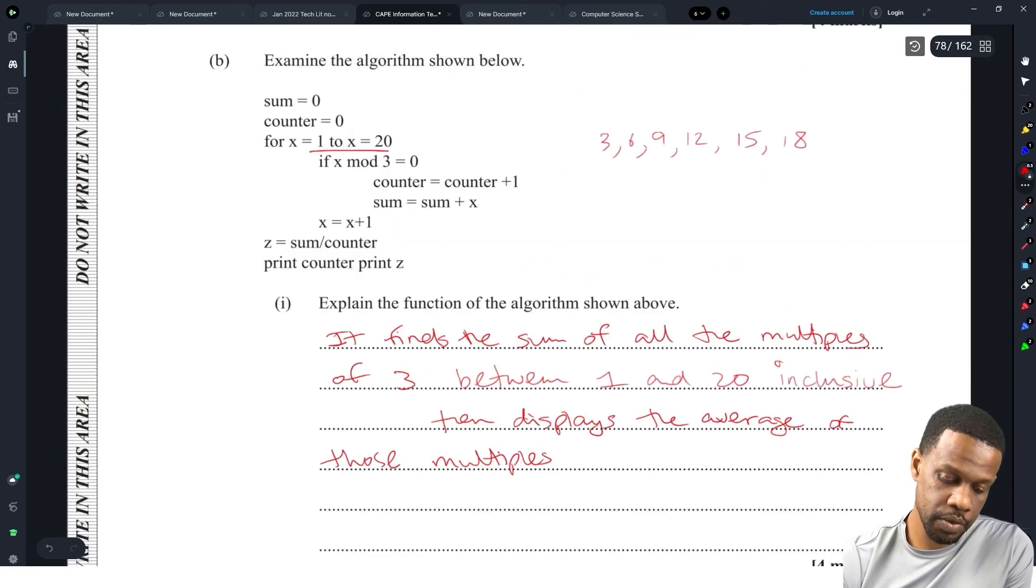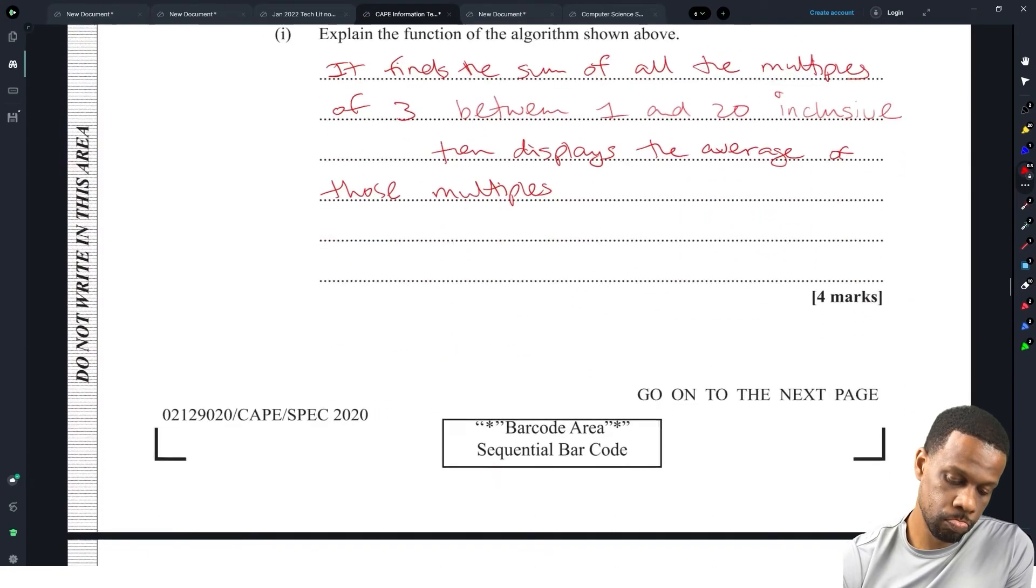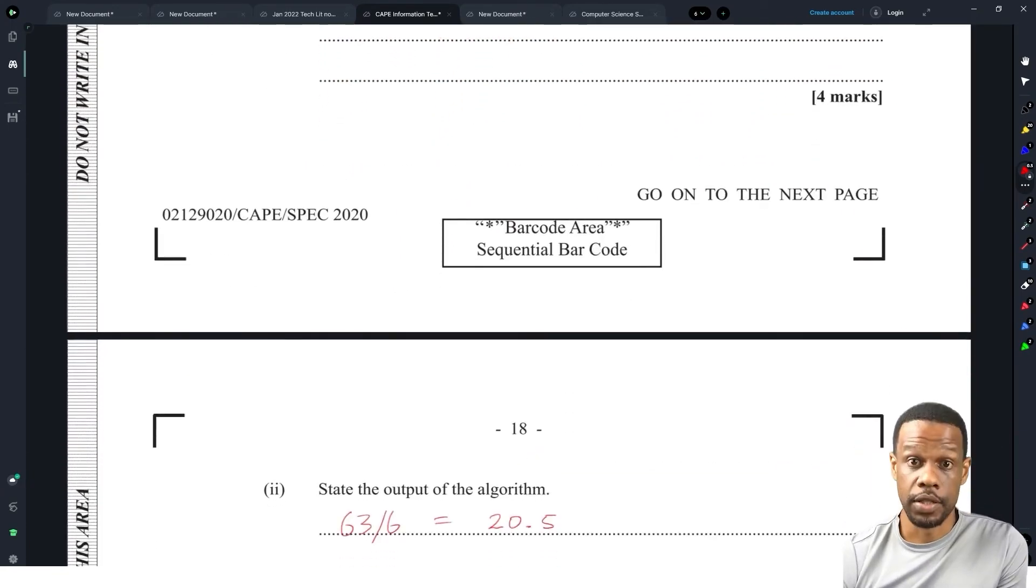Sixty-three divided by six equals 10.5. Six numbers I counted: three, six, nine, twelve, fifteen, eighteen. It's x mod three, so anything that's a multiple of three. I'm correct on that.